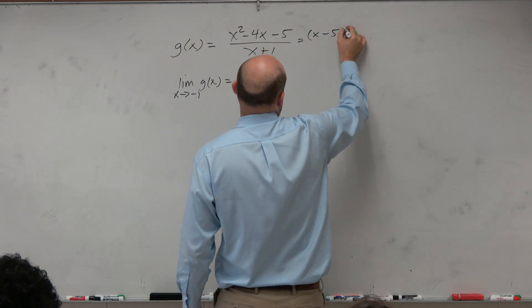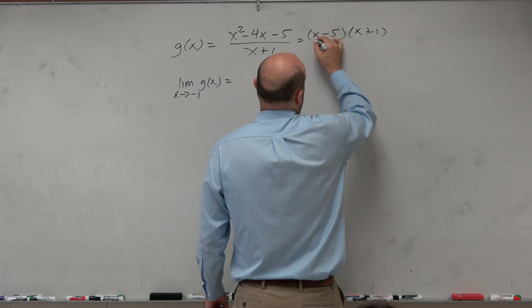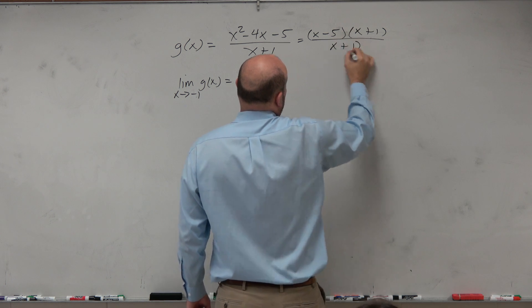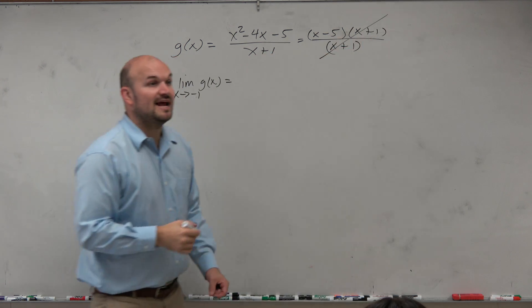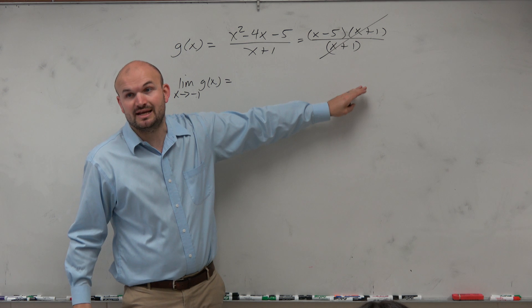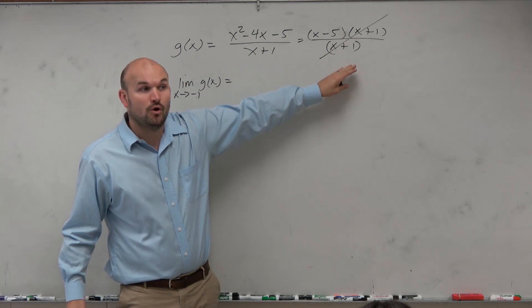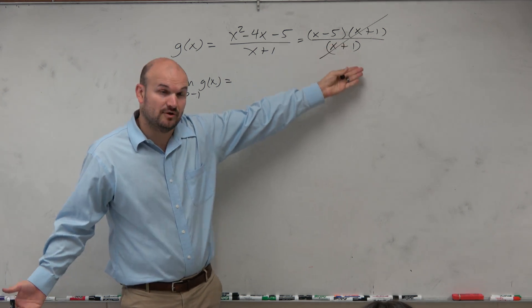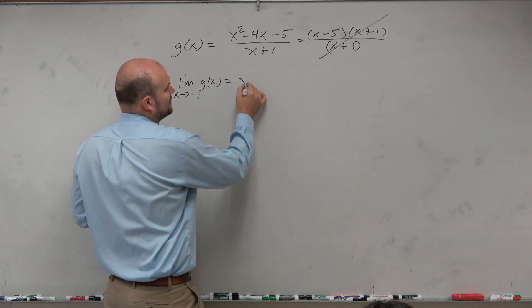So if I factor this to (x minus 5)(x plus 1) all over (x plus 1), those divide out, which means x plus 1 is a hole at x equals negative 1, right? And therefore, I'm just left with x minus 5.